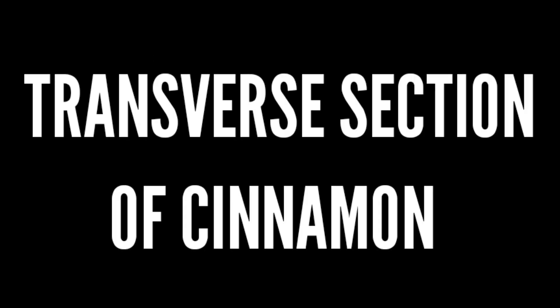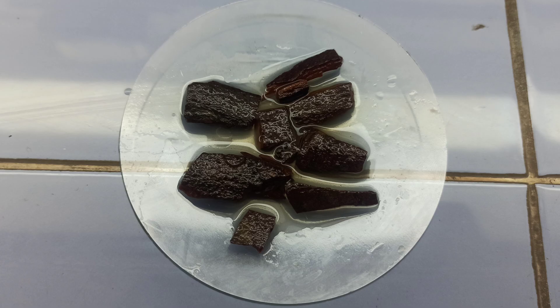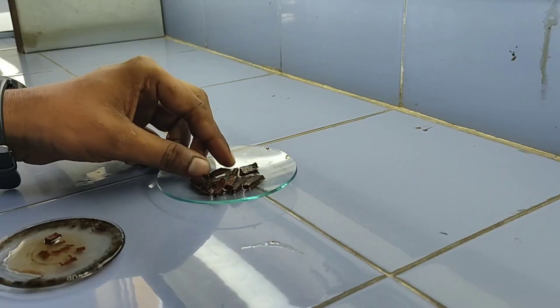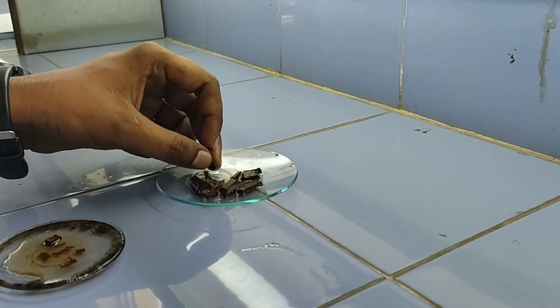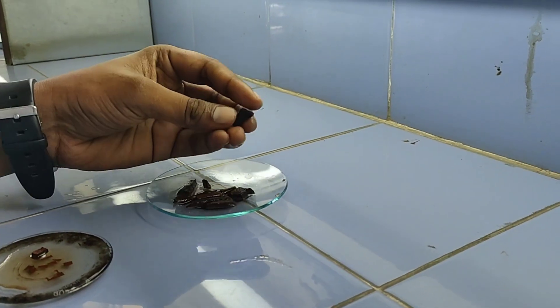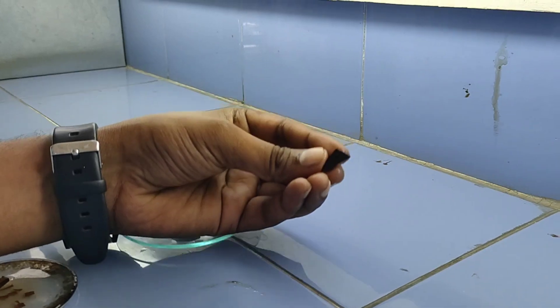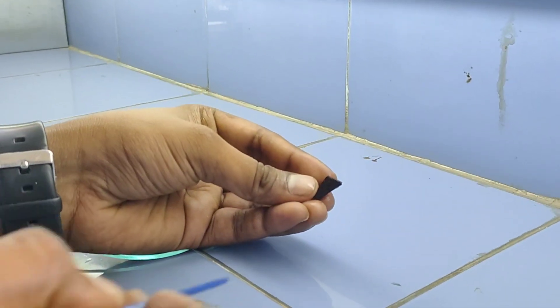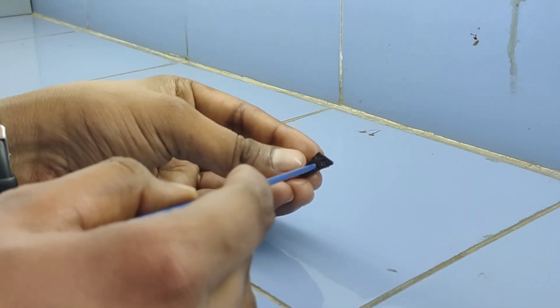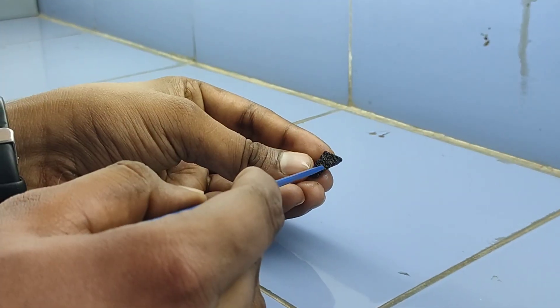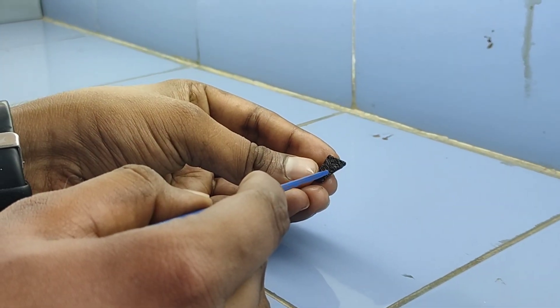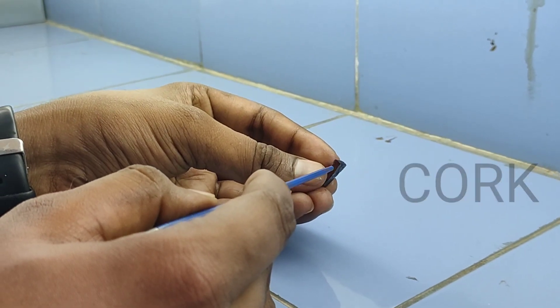Now let's study the transverse section of cinnamon bark. If you are using cinnamon, the bark should be immersed in water. Select the bark which has a good cork.